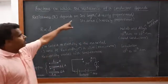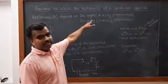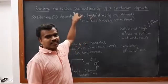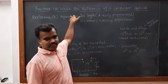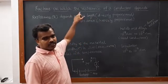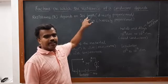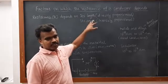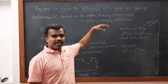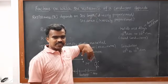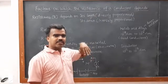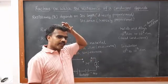Resistance R depends upon its length, in direct proportion — length increases, resistance increases. And resistance depends upon its area of cross-section inversely proportionally — area increases, resistance decreases; or area decreases, resistance increases.